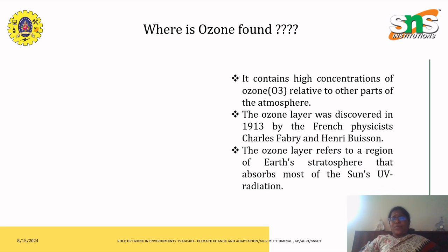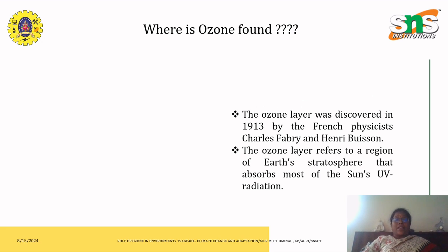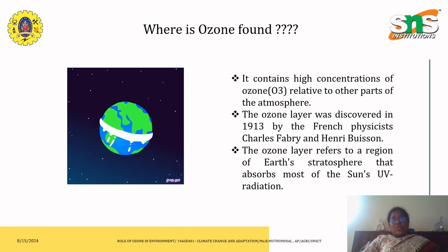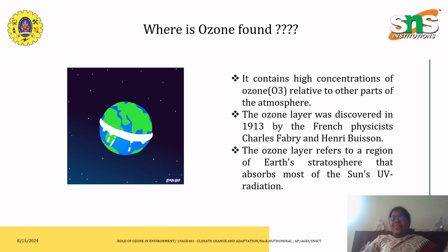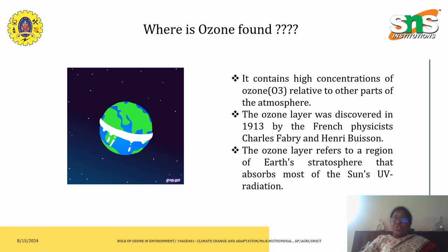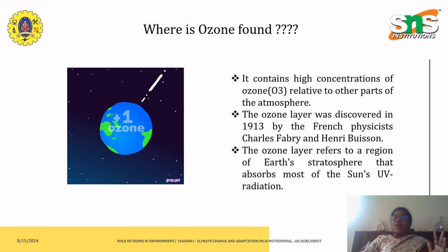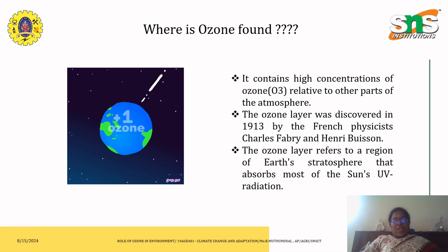The ozone layer refers to a region of Earth's stratosphere which helps absorb most of the UV radiation emitted by the sun. This is how it protects us — every layer of ozone protects us from the UV radiation that is available due to the sun's heat waves.